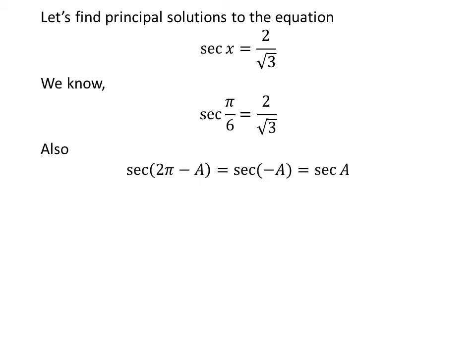The proof of the trigonometric identity is given in the video appearing in the upper right corner of this video. The link of the video is also given in the description section. Application of the above identity implies that secant of 2 times pi minus pi upon 6 is equal to secant of pi upon 6.